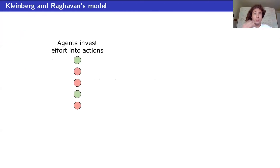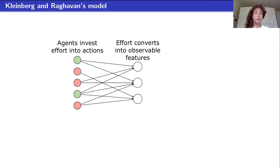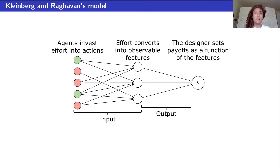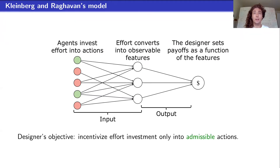I want to briefly outline what this model is. Agents invest effort into actions. Some of these actions, written in green, are good actions, and some in red are bad actions — we want agents to take only the good actions. The principal, the evaluator, does not get to observe these actions directly. They observe some feature values that are linear combinations of the original actions. The designer then sets the payoffs of the agents as some function of those features. As a computational problem, the input is the set of actions, the set of features, and how actions convert into features. The output is how to incorporate these feature values into a payoff such that the agent wants to choose only the green admissible actions.